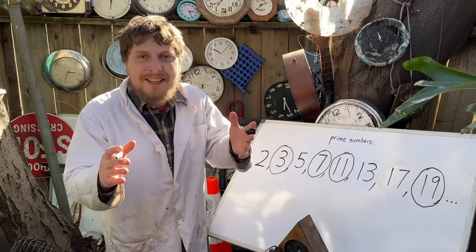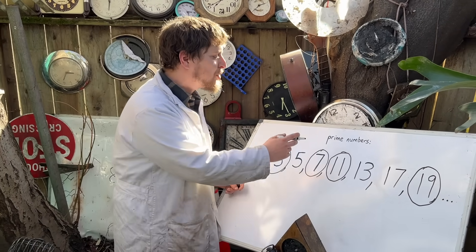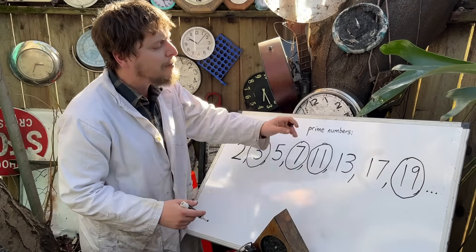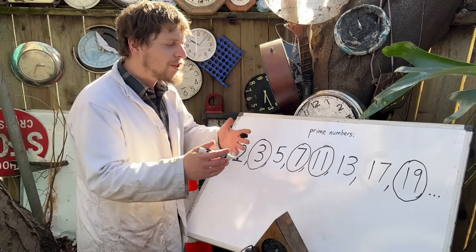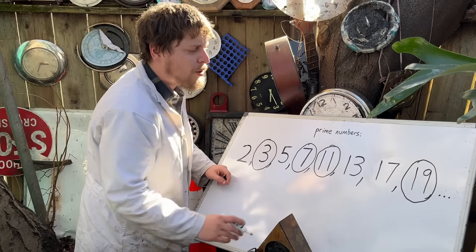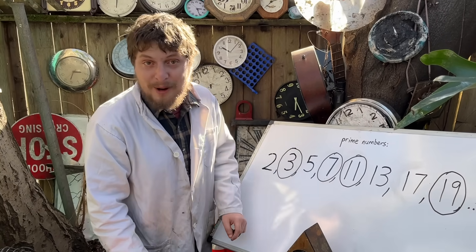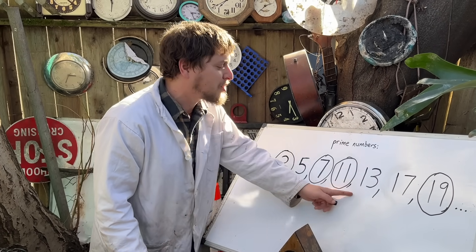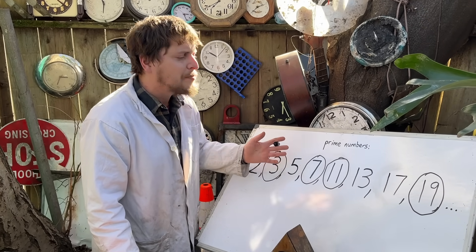There's a slightly different way that you can measure whether something is a prime number or not that results in these ones I circled still being prime numbers, but the ones I didn't circle no longer being prime.